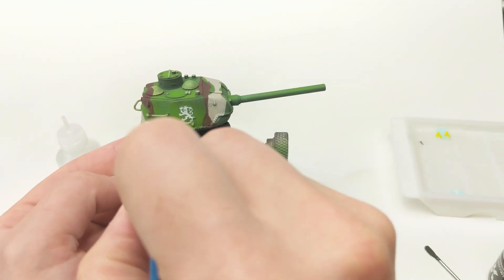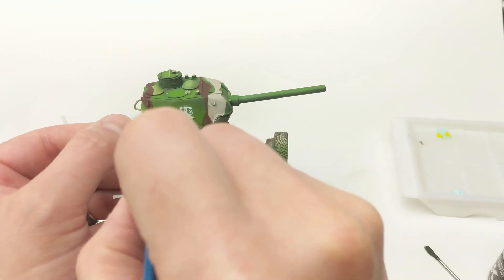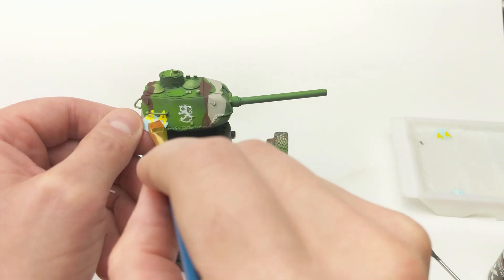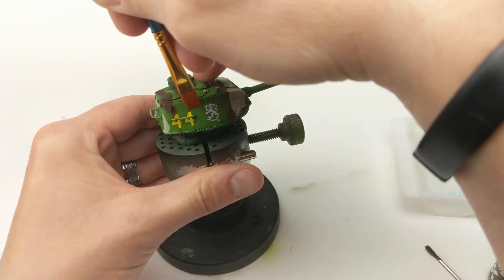You'll see me go back and forth a little bit and stipple the brush onto the decal, especially after I get done putting the 44 up there. The trick is to let the set and soften melt the decal, so it actually adheres to the details of the turret.